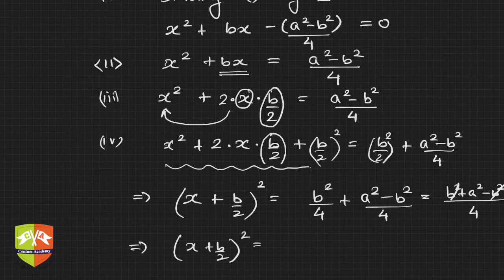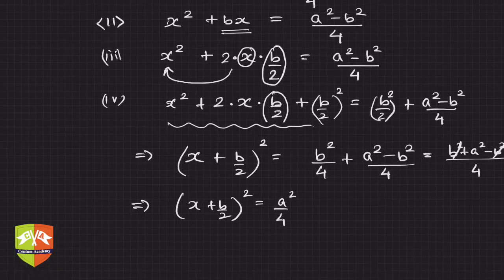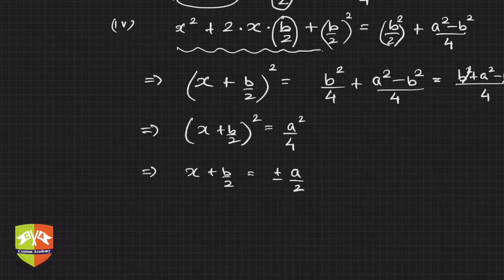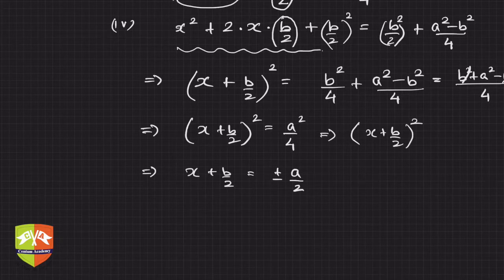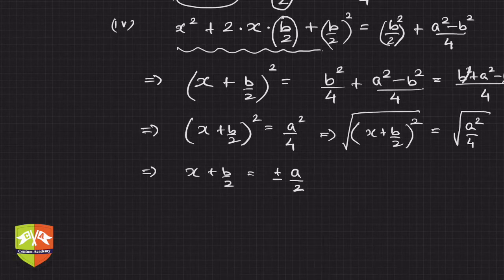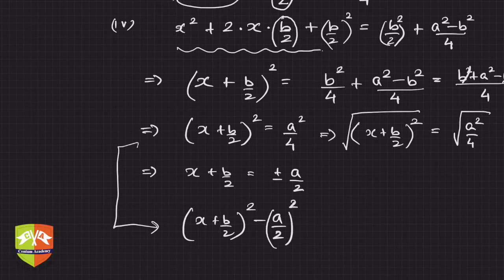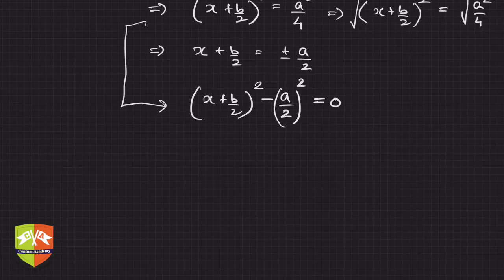This gives us (x + b/2)² = a²/4. Now, rather than square-rooting both sides directly — because the square root of any term is always positive, never negative — the better method is to rewrite this as (x + b/2)² − (a/2)² = 0, since a²/4 is the same as (a/2)². This reduces to a difference of squares.